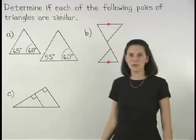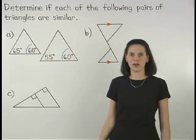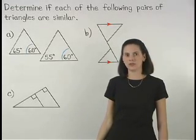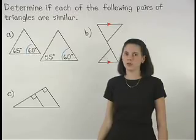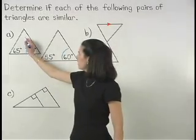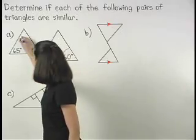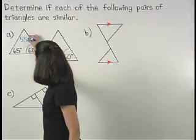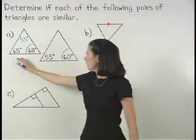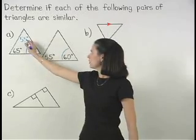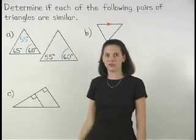But remember that the sum of the measures of the angles of a triangle is 180 degrees. So we can determine that the measure of the missing angle of the first triangle is 55 degrees, because 65 plus 60 plus 55 equals 180.